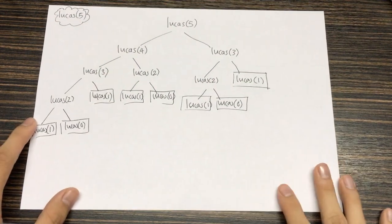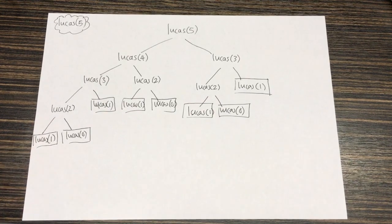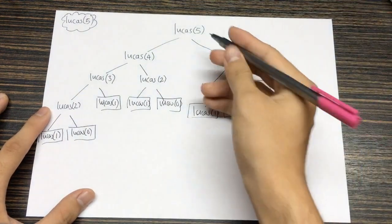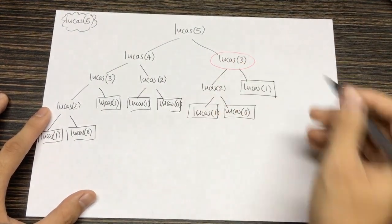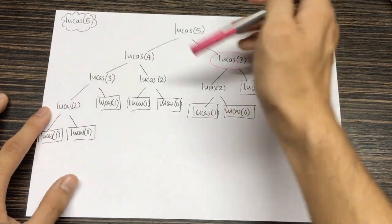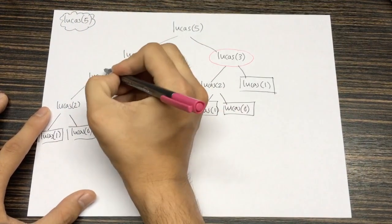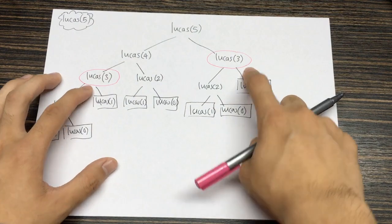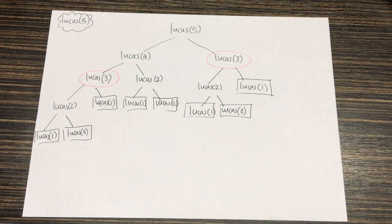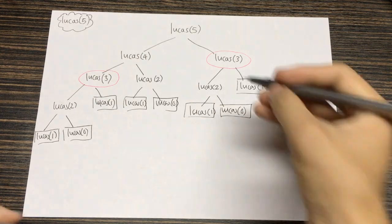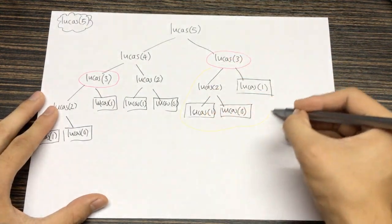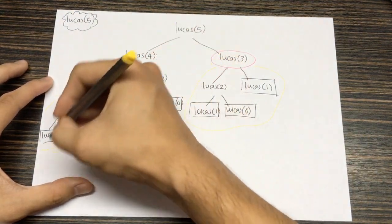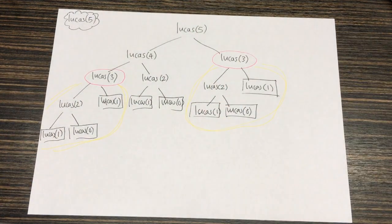But as you can see, you might already be able to spot some of the problems, because there is actually a lot of overlapping. For example, when we find the fifth Lucas number, we have to find the third Lucas number as well. But again, when we're finding the fourth Lucas number, we also have to find the third Lucas number there again. So there's overlap within our problem itself. And the third Lucas number turns out to be pretty time-consuming to find, because to find the third Lucas number, we have to do all this work down here.